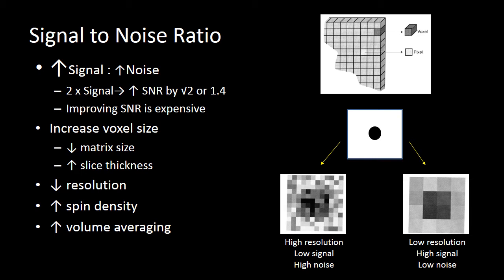When we think about what generates our signal-to-noise, our images are displayed as pixels, but really they are a two-dimensional representation of a voxel — a volume of space containing protons. As we increase our voxel size, our matrix size will decrease and our slice thickness will increase. Increasing that slice thickness drops our resolution, but each voxel now contains more protons, meaning more spins within an individual voxel and therefore more signal.